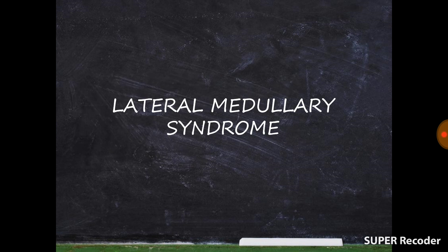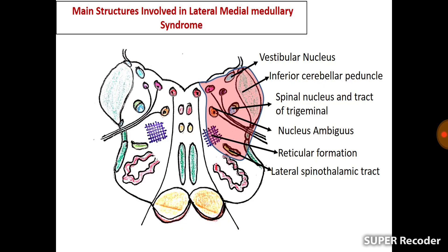Now let's focus on the lateral medullary syndrome. As mentioned, it occurs when the posterior inferior cerebellar artery is involved, so this syndrome is also called the PICA syndrome. It is additionally known as the Wallenberg syndrome. To understand its presentation, we will again focus on the anatomical structures involved.